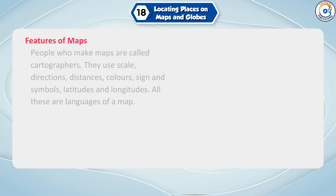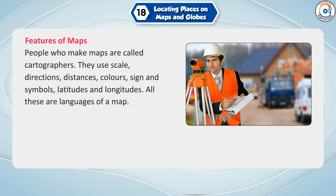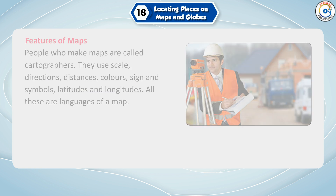Features of Maps: People who make maps are called cartographers. They use scale, directions, distances, colors, signs and symbols, latitudes and longitudes. All these are the languages of a map.